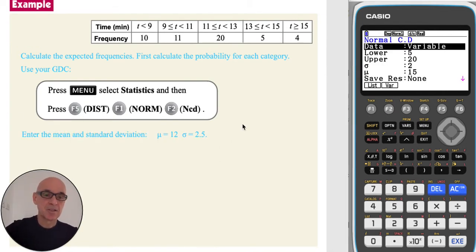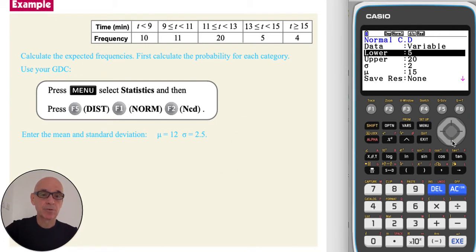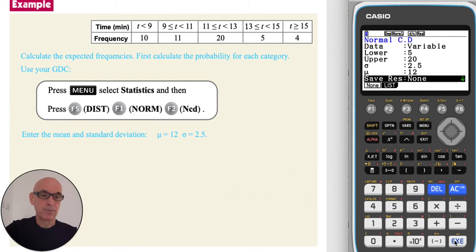To set up the distribution, scroll down and set the standard deviation to equal 2.5, press and execute, and then set the mean to equal 12 and press and execute. Then scrolling back up to the lower limit.